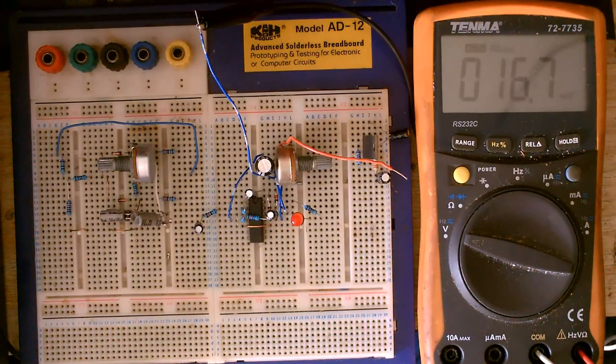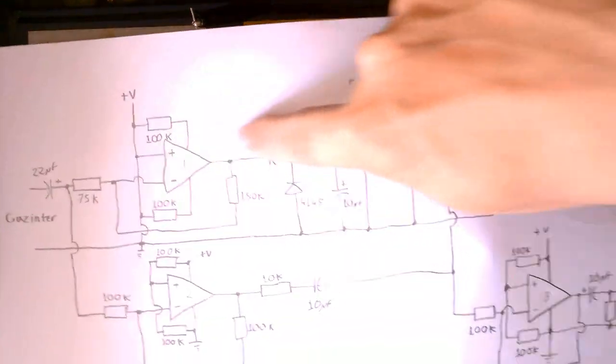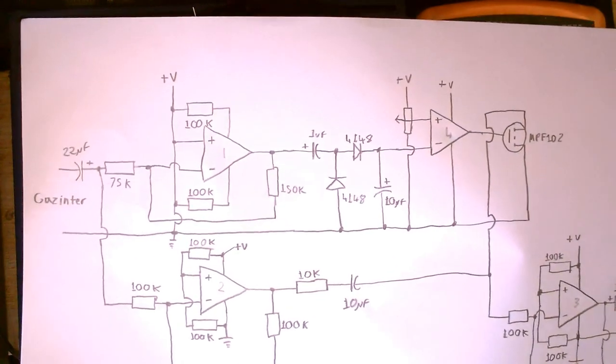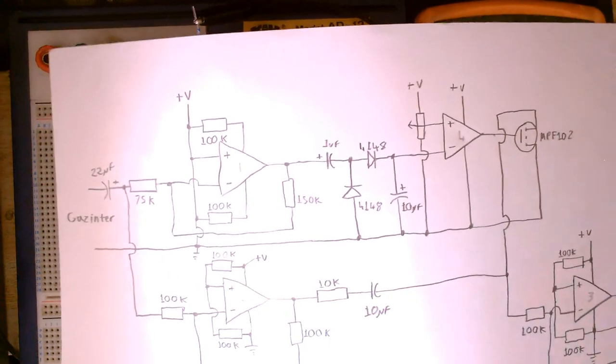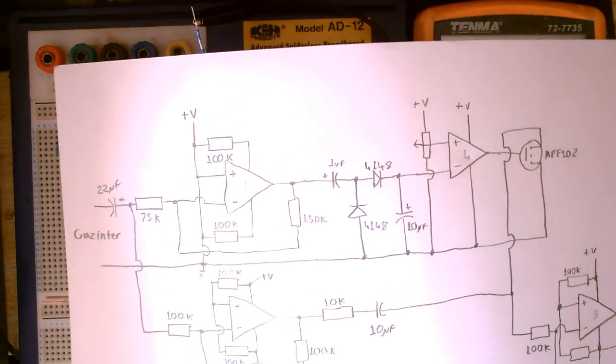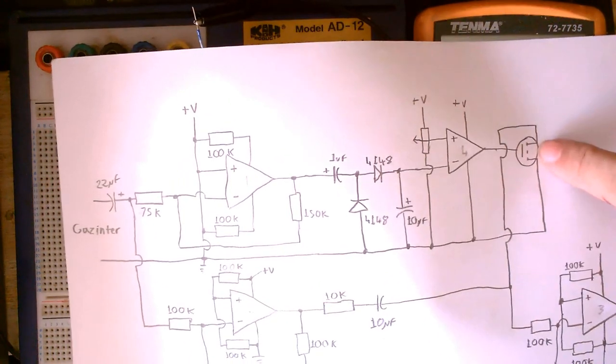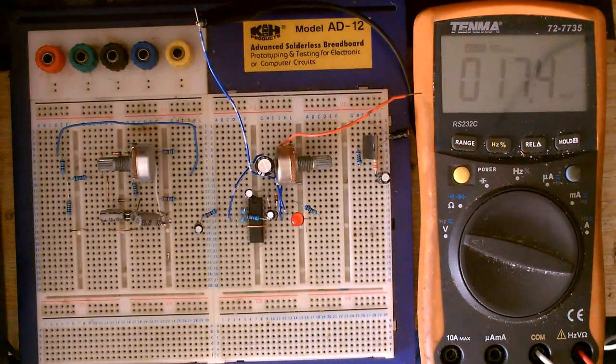All right, so I have built up this top part of the circuit. I made a few changes as well. So just ignore the stuff at the bottom here, that's not, I haven't done that yet. And also instead of a JFET here, I have put an LED just so I can see what's going on.